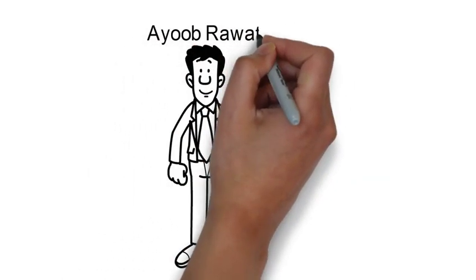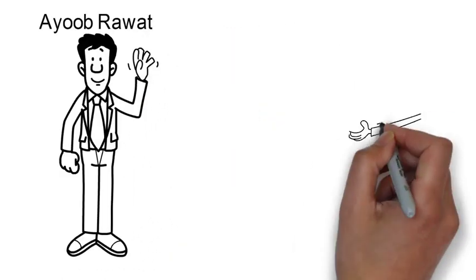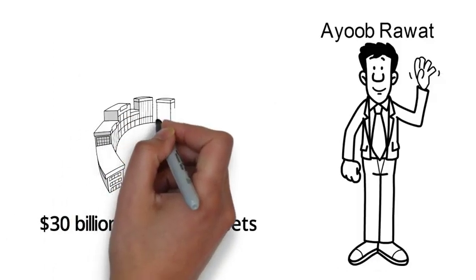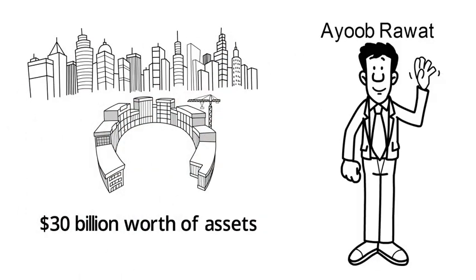Hello, my name is Ayub Rawat, and about 10 years ago, I was earning a good income, running my Swiss-based family office, and safeguarding approximately $30 billion worth of assets for a number of high net worth individuals and families.